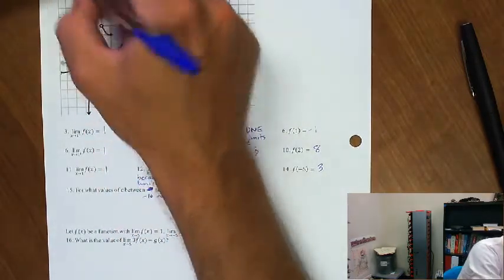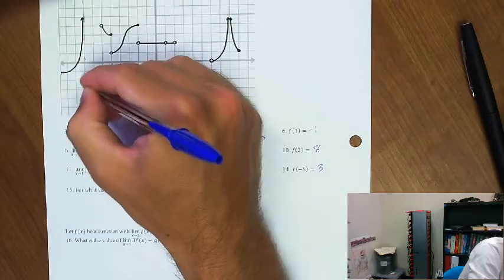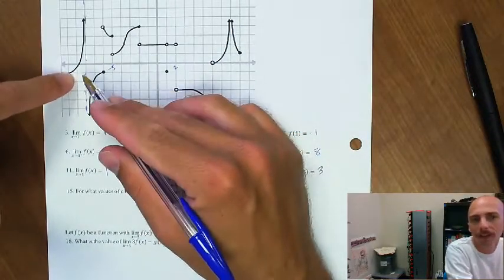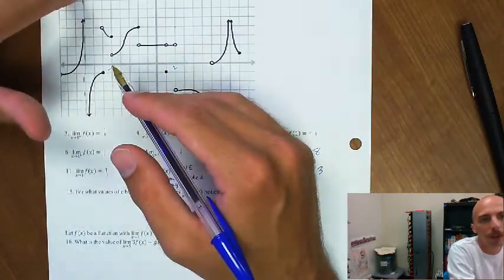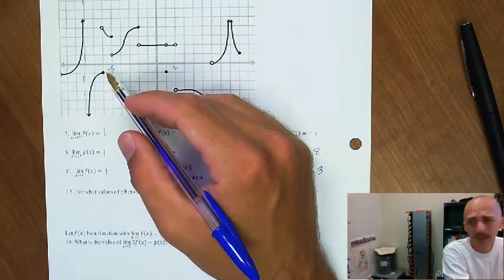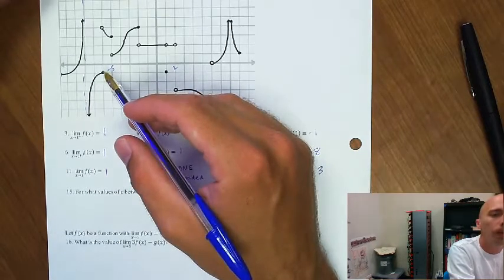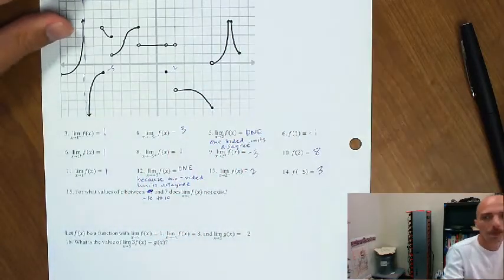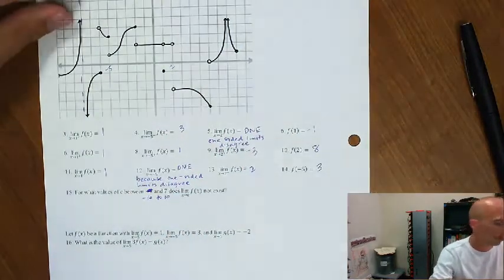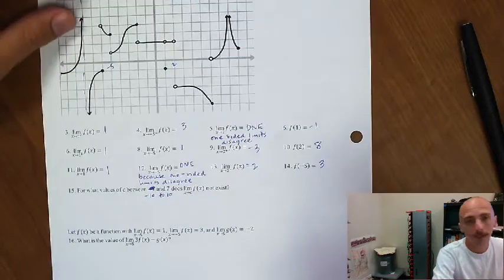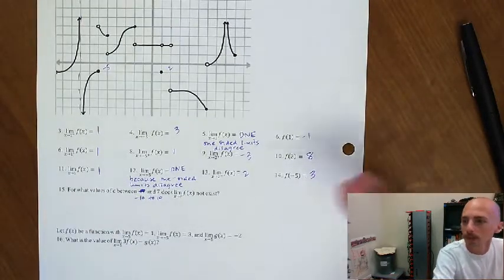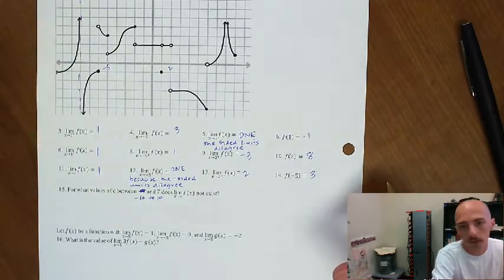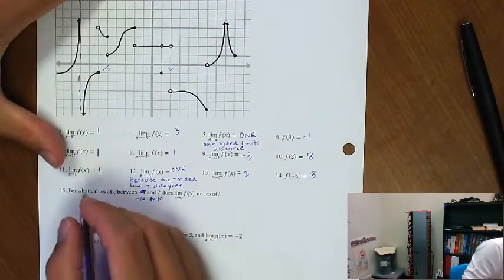The first thing I see is a vertical asymptote. The limit is not going to exist there. As x approaches negative 8 from the negative side, we're going towards positive infinity. As we approach negative 8 from the positive side, we're headed towards negative infinity. Since positive infinity and negative infinity are not the same thing, that limit doesn't exist — it fails to exist because of an infinite discontinuity. So I've got x equals negative 8.